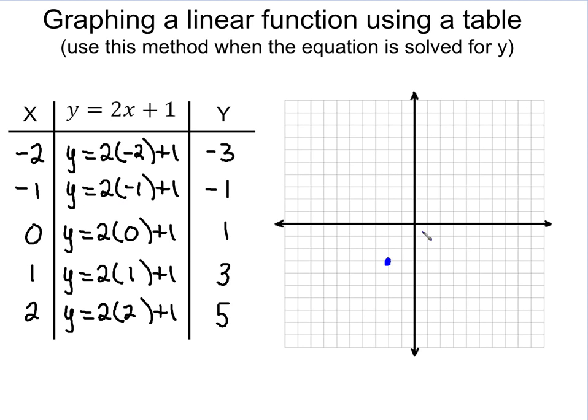Next point we're going to graph is negative 1, negative 1. So we're going to go over negative 1, down negative 1. Put a point there. Then 0, 1. 1, 3. And then 2, 5.